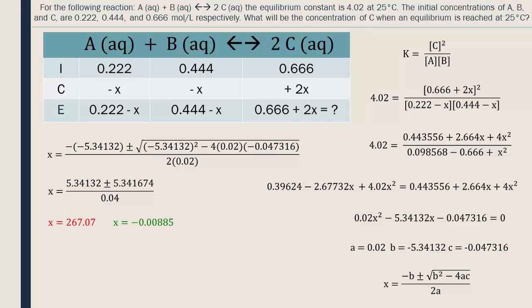It's absolutely okay to have a negative x value. Now we just need to find the concentration of C at equilibrium. Rounding to three significant digits, the concentration of C is 0.648 moles per liter.